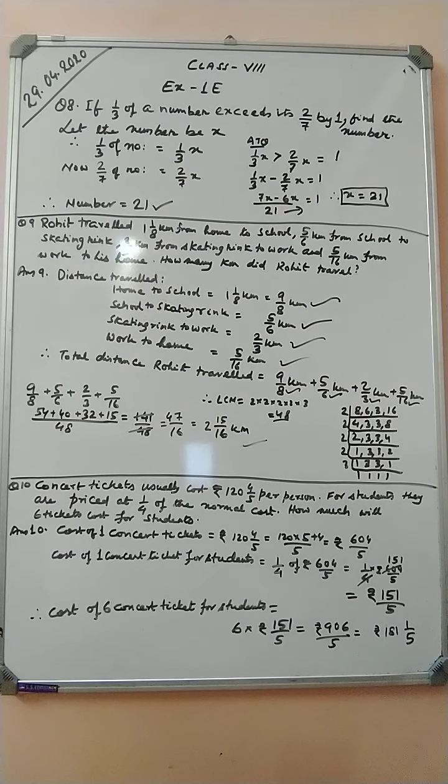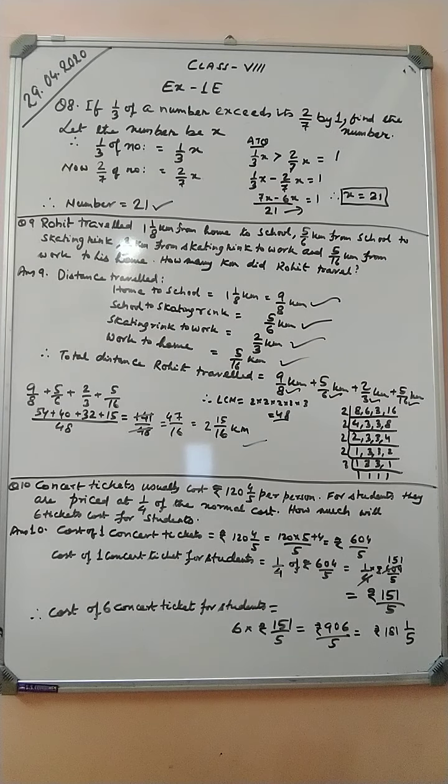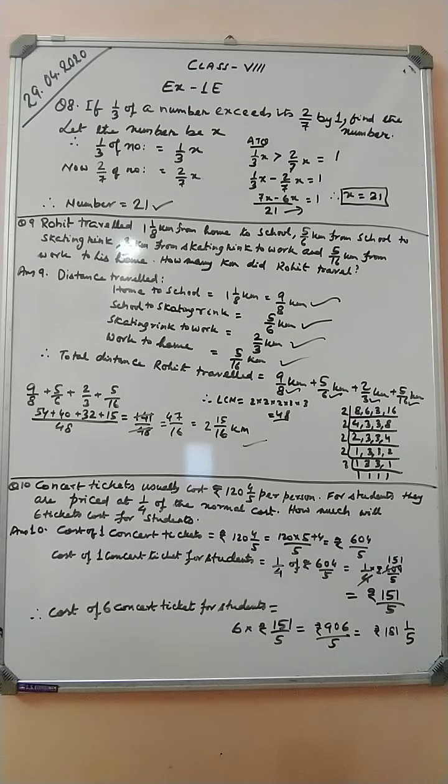So, 1 by 3 of a number. Let the number be x. Then 1 by 3 of a number means 1 by 3x. Exceed 2 by 7, that means 1 by 3x is greater than 2 by 7x. By how much? By 1.